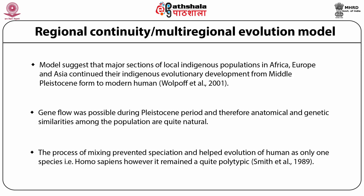However, the species remains quite polytypic. The model classifies all hominids following Homo erectus as a single species, Homo sapiens. Despite strong views on regional evolution, the model also accepts the detectable influence of African immigrants throughout the world.